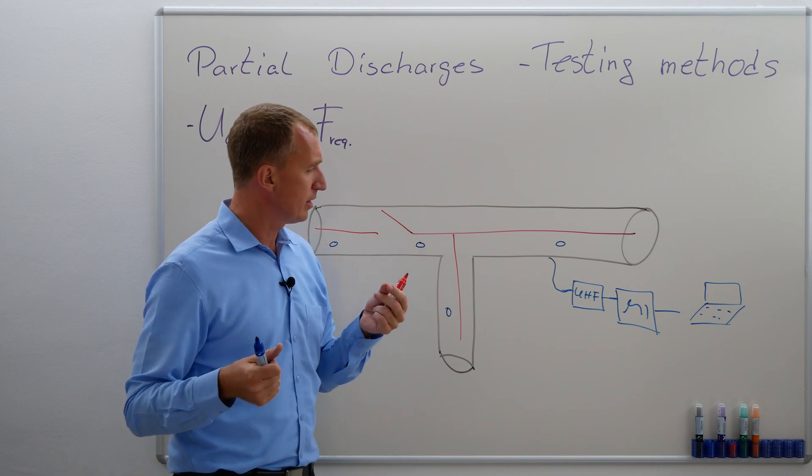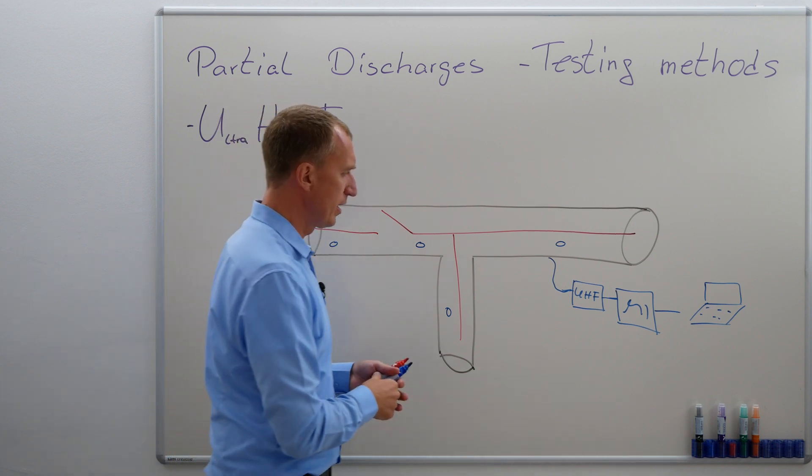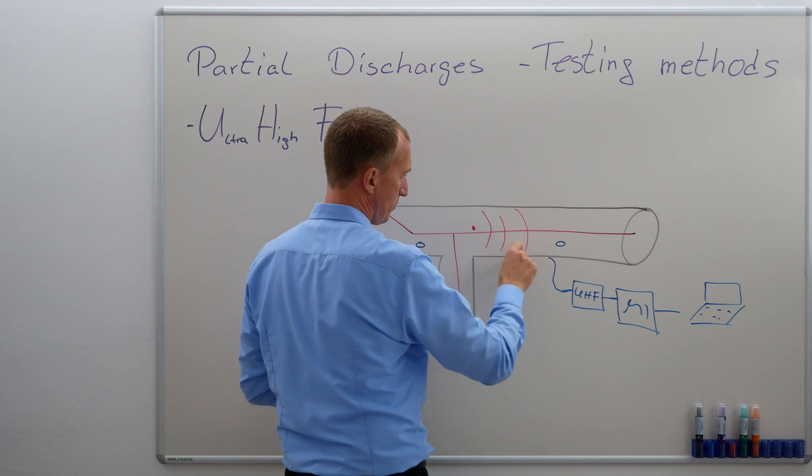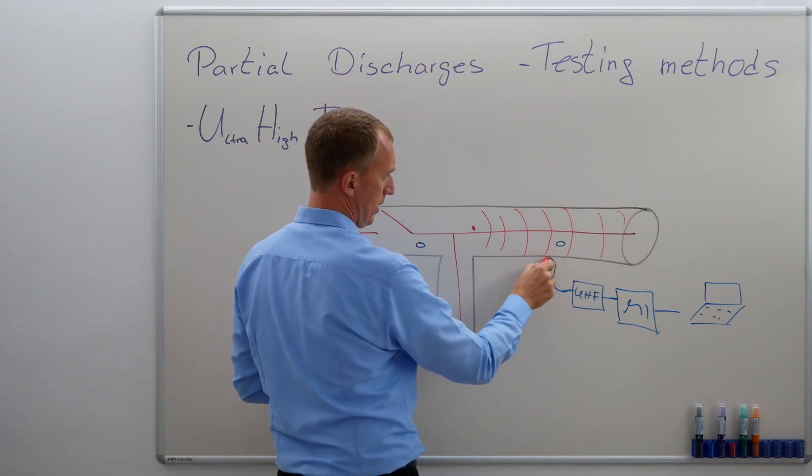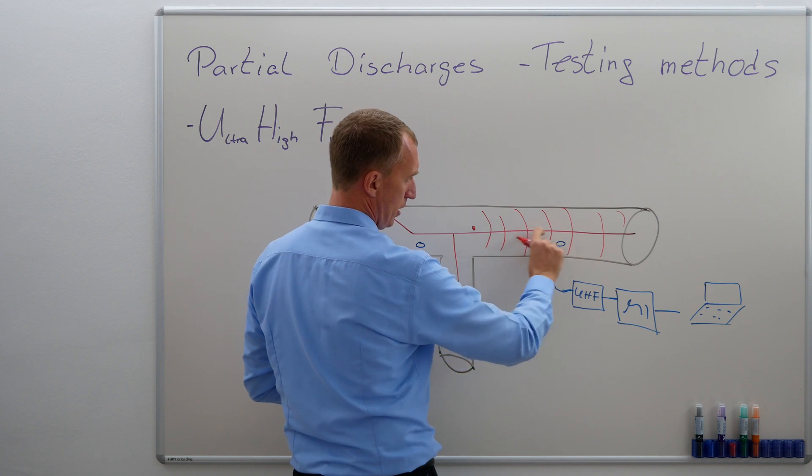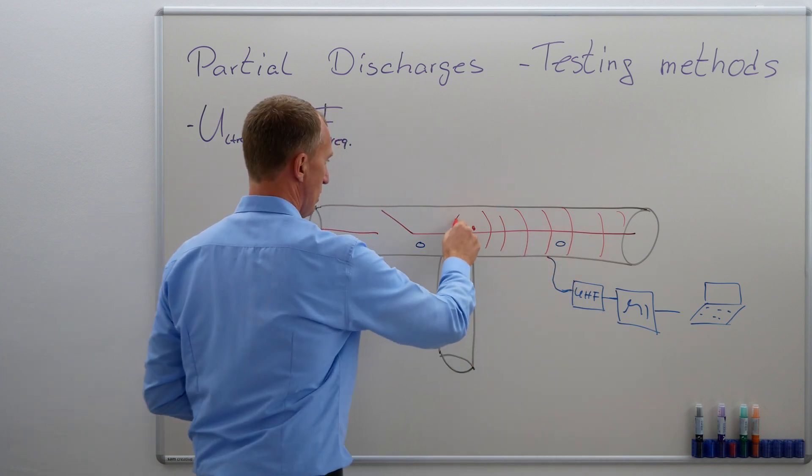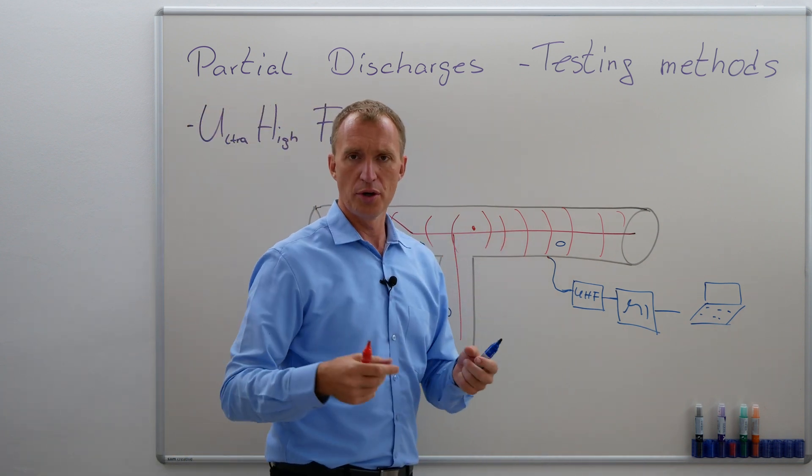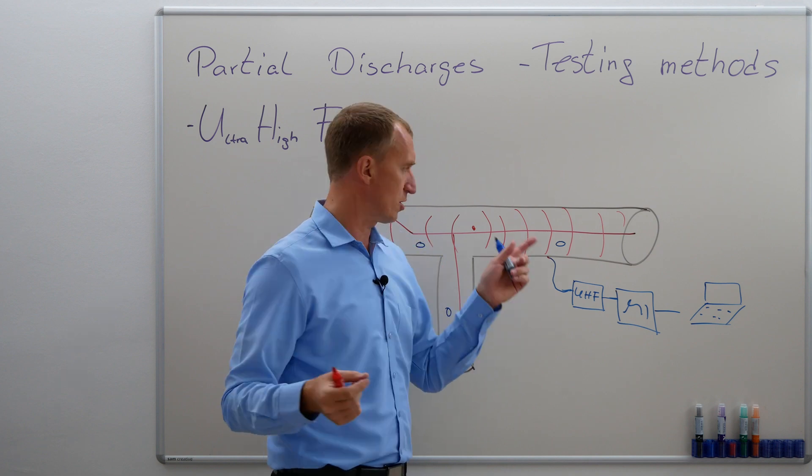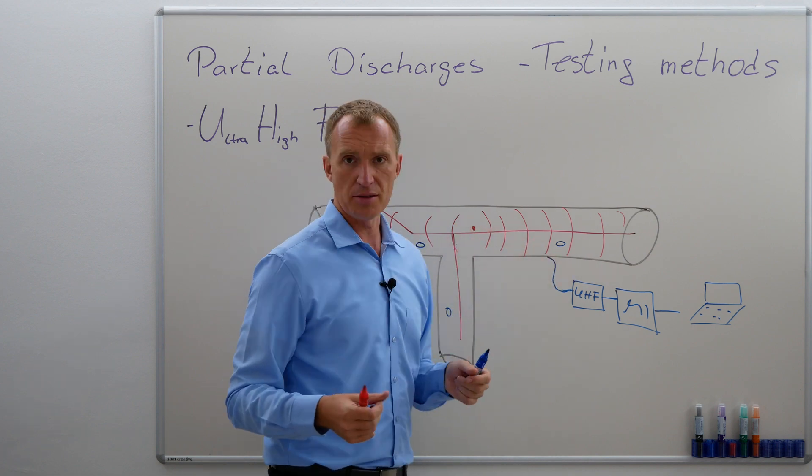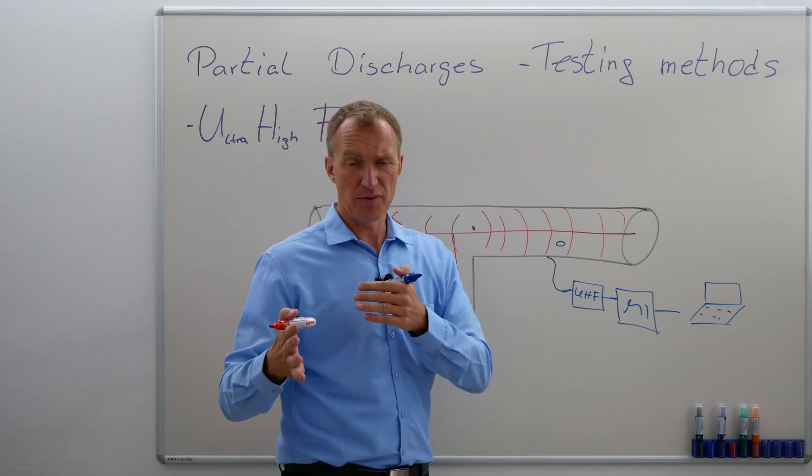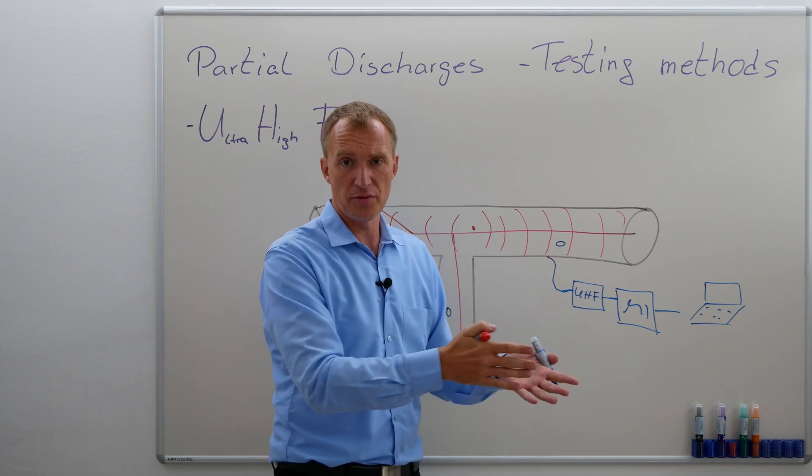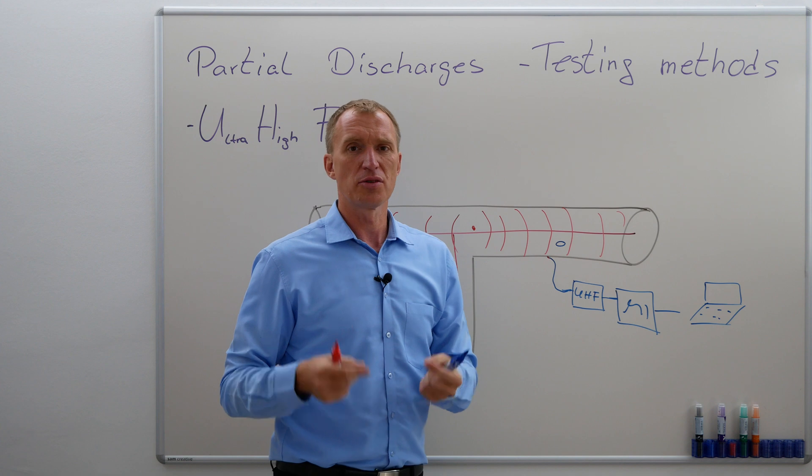Once again, you can't really calibrate, because once again, if you have a partial discharge inside here, the wave will travel inside here, right? And when it hits my UHF sensor, or it travels on here, I would be able to sense it, it will travel in here as well. Calibration would only be possible once I know where it is, and I know the distance between the source and my sensor. And then the next thing is, depending on the frequency band I'm measuring in, it changes. So this is not so easy.